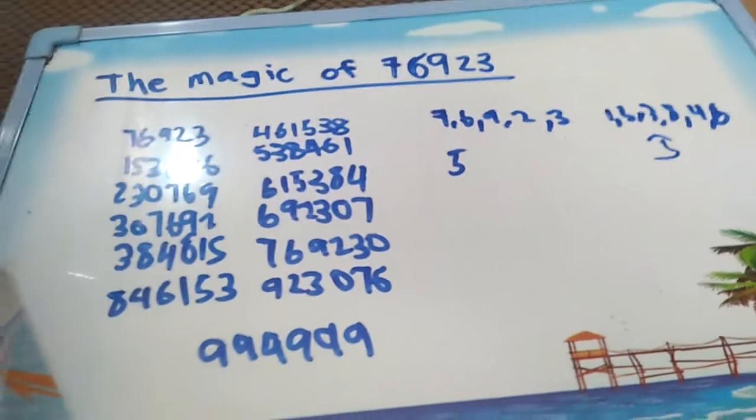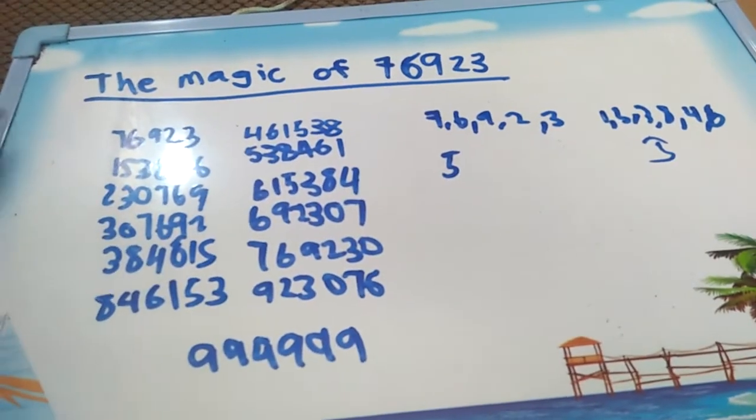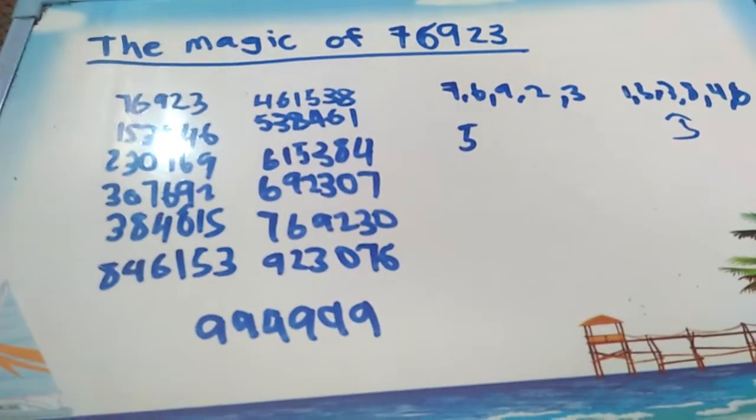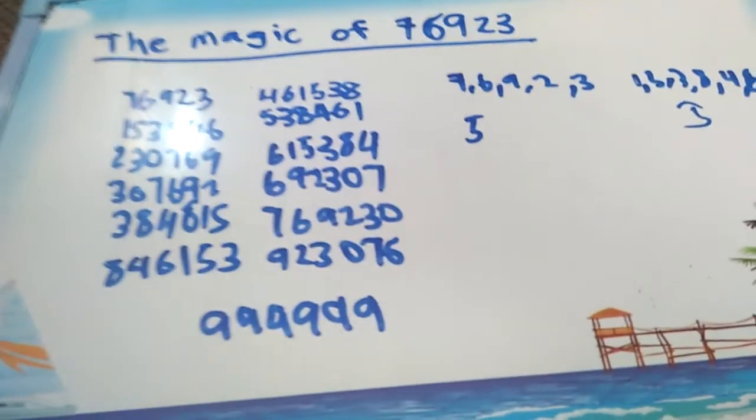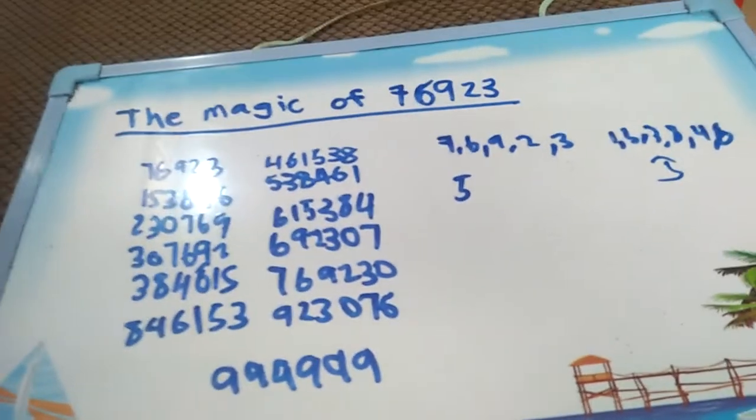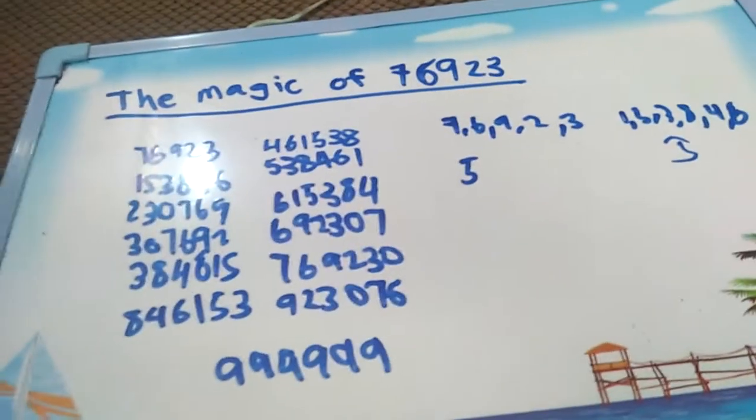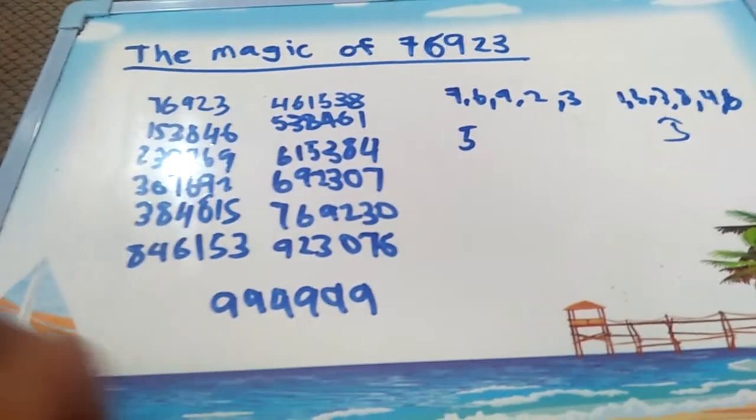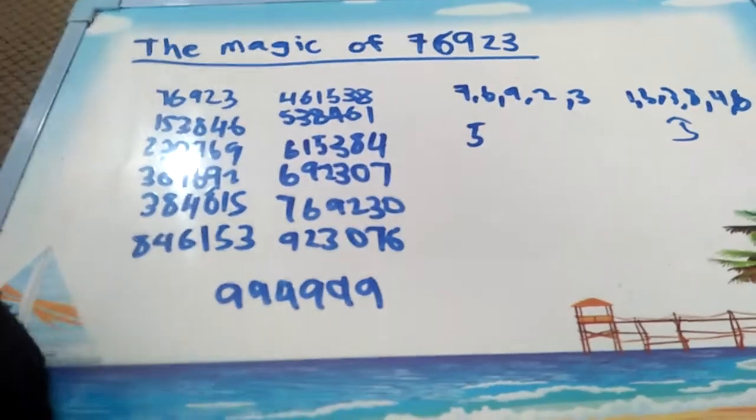Also, 999,999 is divisible by 2 digit-changing numbers, and those are 76,923 and 142,857.